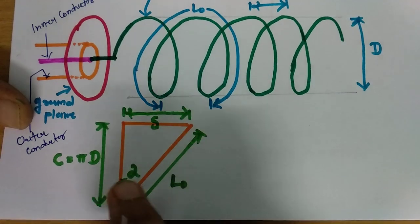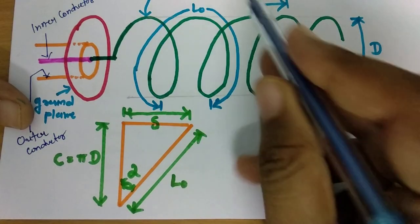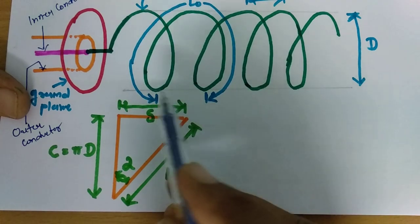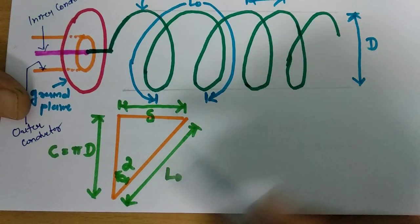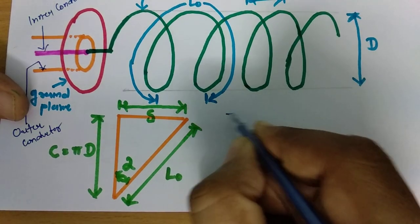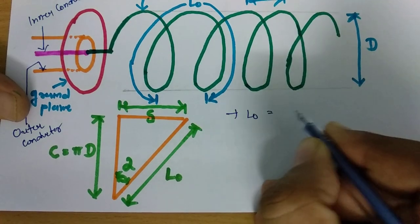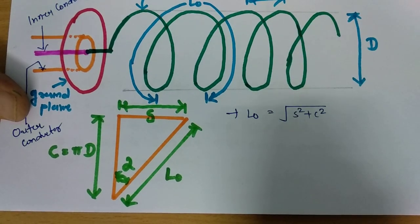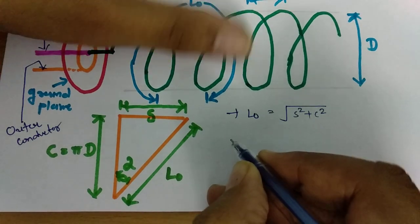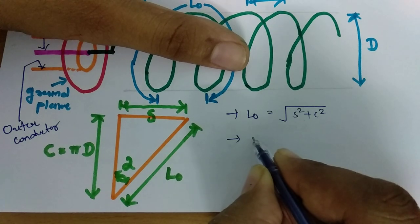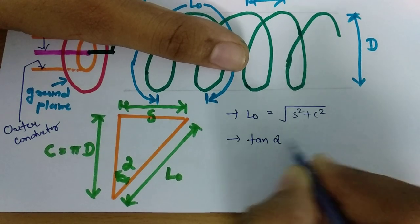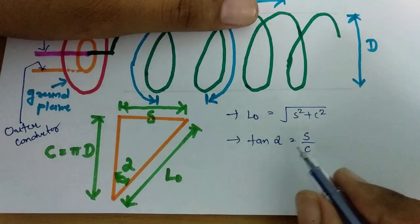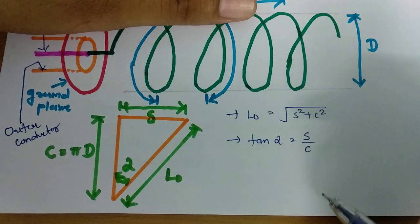Here, this angle is alpha. The length of one turn is L0, and spacing between two turns is S. Circumference C is one side, spacing S is another side, and the diagonal is L0. As per the Pythagorean theorem, L0 equals the square root of S squared plus C squared. We can also calculate alpha: tan alpha equals S divided by C, where S is spacing between two turns and C is the circumference of the Helical Antenna.